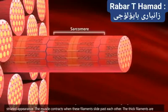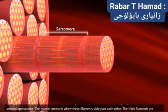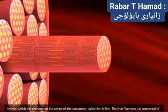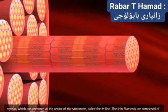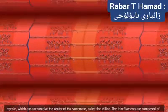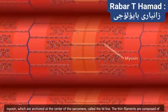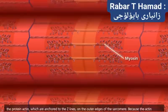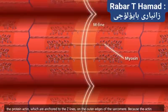The muscle contracts when these filaments slide past each other. The thick filaments are myosin, which are anchored at the center of the sarcomere, called the M-line.